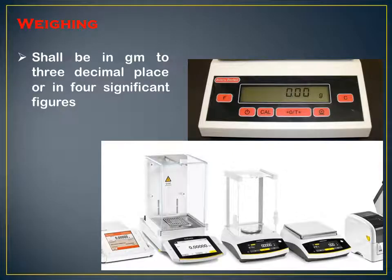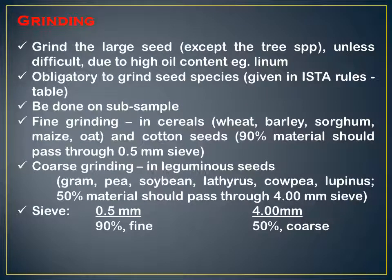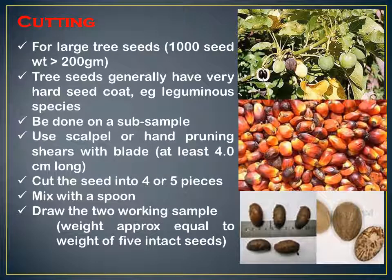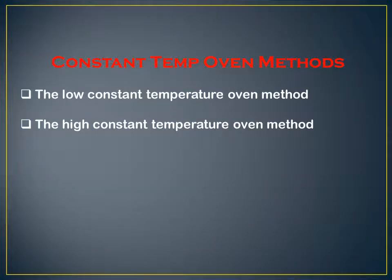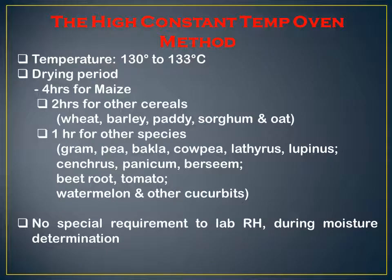The analytical balance should weigh to three decimal places or four significant figures. Working sample size is determined by following standard procedures. Grinding is required for large seeds unless difficult due to high moisture content — always follow ISTA rules. Both low constant temperature and high constant temperature oven methods are used. The relative humidity of the lab should be around 70 percent. For high constant temperature ovens, temperature should be 130 to 133 degrees centigrade.